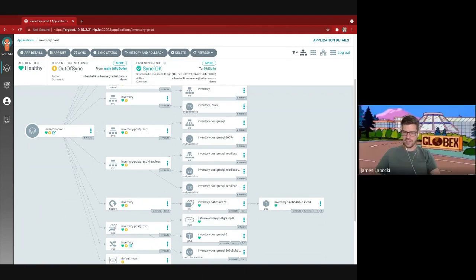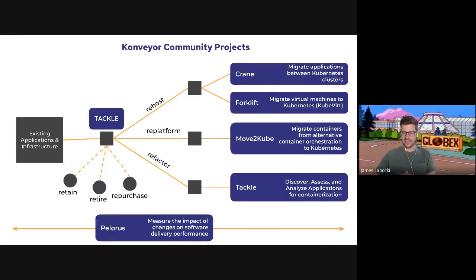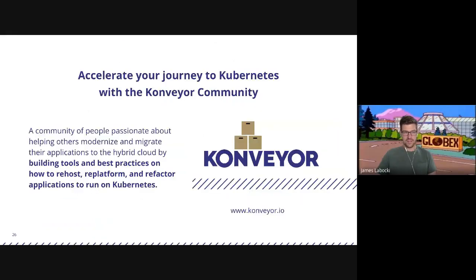Great, awesome. Thank you so much, Marco — that's a great demo. Now I believe. So this is basically the end state we've gotten to. We've seen how we can now have all of our services running on Kubernetes, leveraging a GitOps paradigm, and simplifying our operations by running on a single Kubernetes platform. This puts our retail application in a great place — we can start to plug in cloud services, bring in AI/ML, all the new cool things that are available when you're running your application natively on Kubernetes. Hopefully this demo by the conveyor group was helpful. Just to reiterate some of the tools you've seen across rehosting, re-platforming, and refactoring — you can see them here. In the future, we're going to be bringing in Polaris as well, which will actually help us measure those DORA metrics so that we can see the improvements we're making from a software delivery standpoint over time.